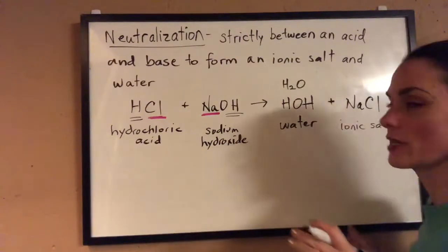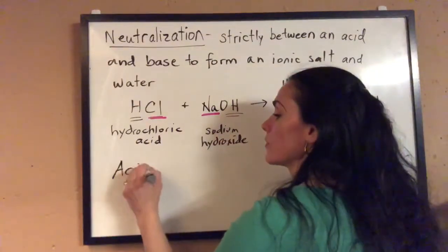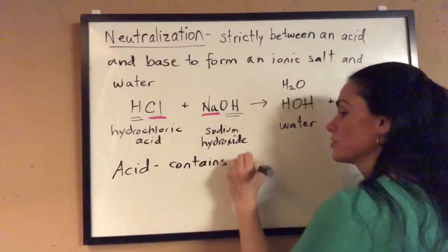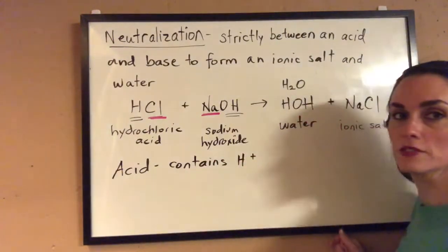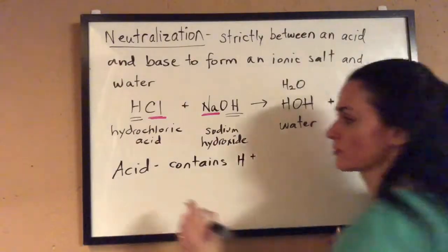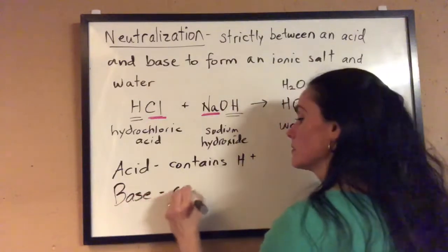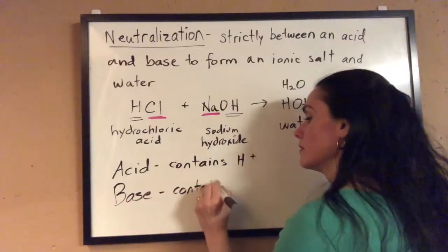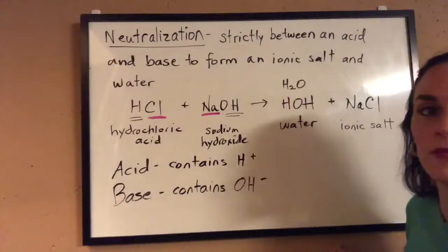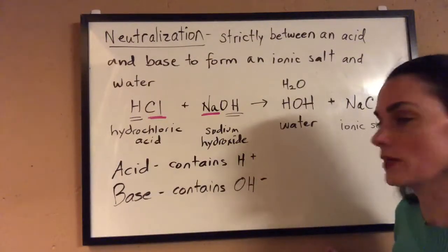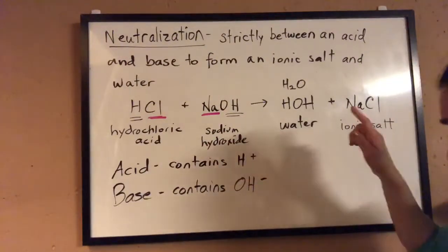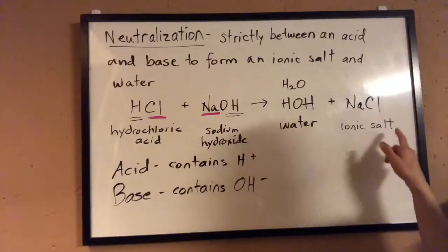For our purposes, how do we define what an acid is? An acid contains a hydrogen ion. This definition is limited and we'll learn a more expanded definition a little later on. A base contains the hydroxide ion. Again, this definition is limited. So when you have an acid react with a base, you get the products of water and an ionic salt.